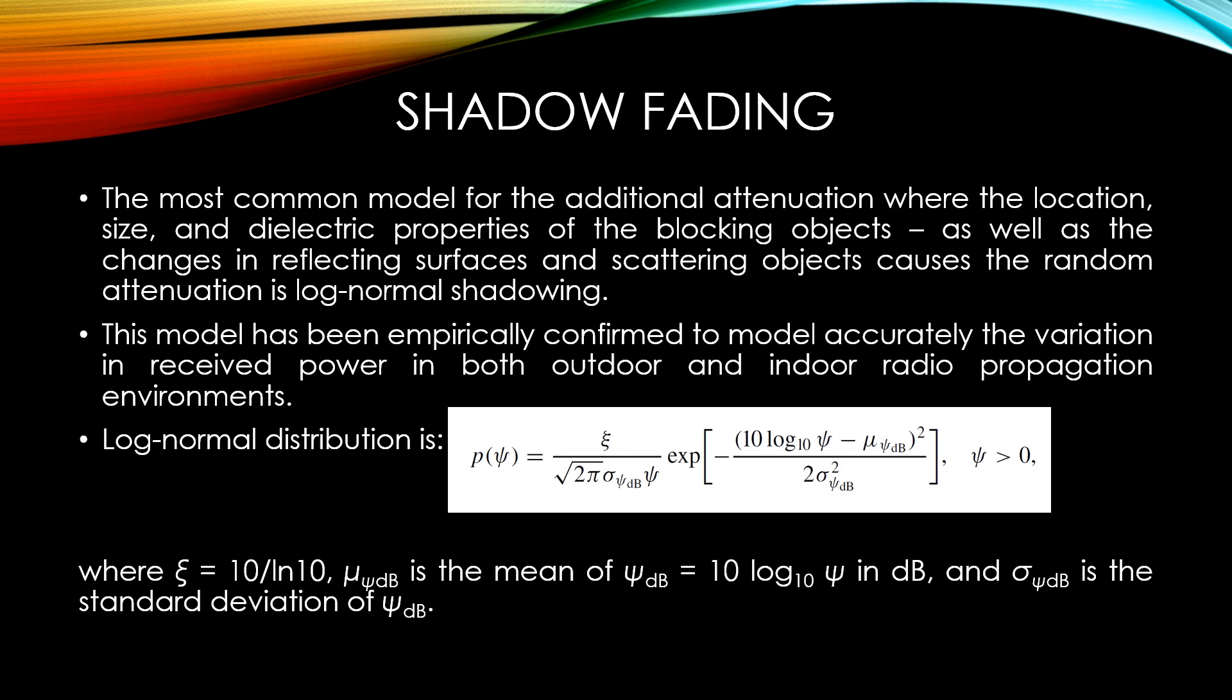Shadow fading. A signal transmitted through a wireless channel will typically experience random variation due to blockage from objects in the signal path, giving rise to random variations of the received power at a given distance. Such variations are also caused by changes in reflecting surfaces and scattering objects. Thus, a model for the random attenuation due to these effects is also needed. The most common model for the additional attenuation, where the location, size, and dielectric properties of the blocking objects as well as the changes in reflecting surfaces and scattering objects is log-normal shadowing. This model has been empirically confirmed to model accurately the variation in received power in both outdoor and indoor radio propagation environments.